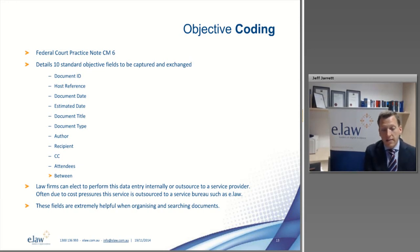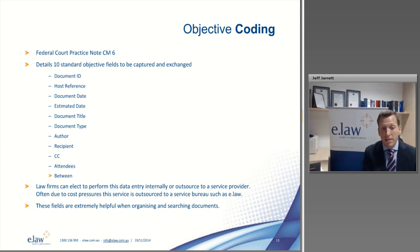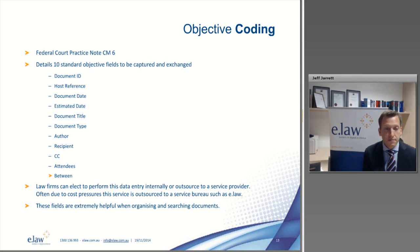The Federal Court Practice Note lists ten fields that must be disclosed for every document: the document ID (a unique identifier), the host reference indicating whether it's an email or attachment, the date, estimated date indicating if it's a partial date, the title, the document type, and then five party fields. This information is extremely useful — if you want to sort documents in date order, you have the document date field available. With one click, everything is sorted by date. This objective coding is typically done internally at a law firm or outsourced to a service bureau.